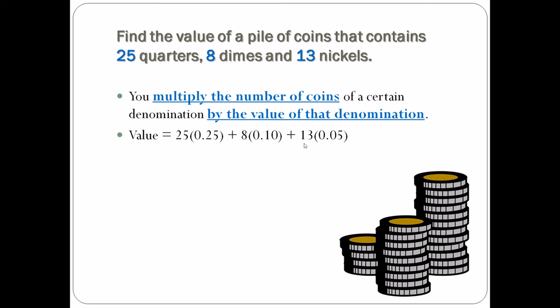They're not going to write an equation. You do not have to write an equation; you just need to find the amount. 25 quarters is $6.25, eight dimes is 80 cents, and 13 nickels is 65 cents. When you add it all up, your pile of coins is $7.70. Not too bad.